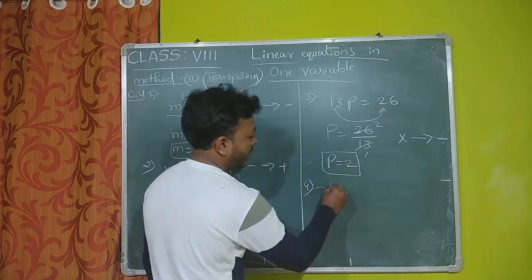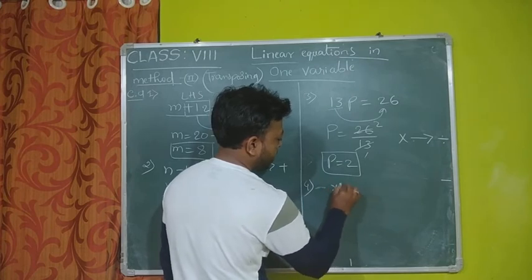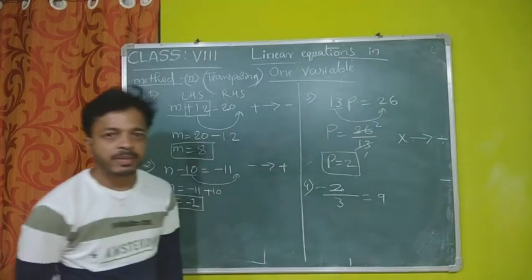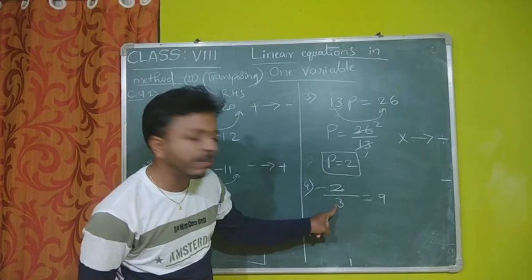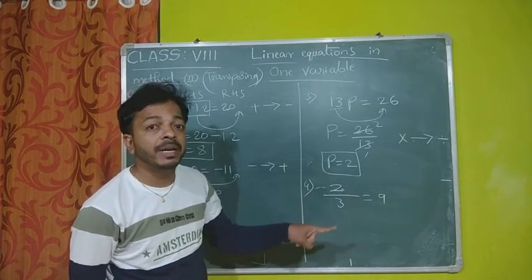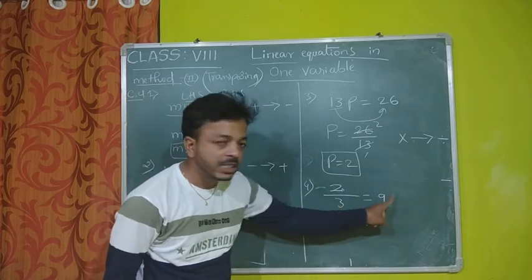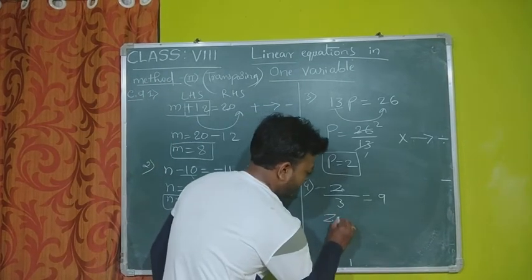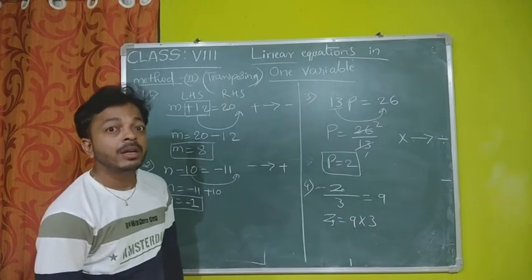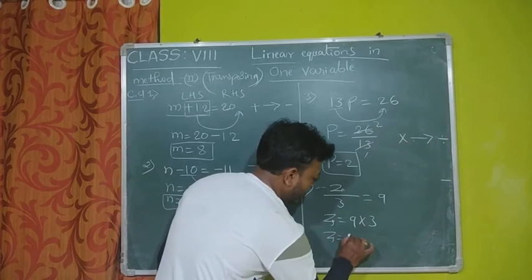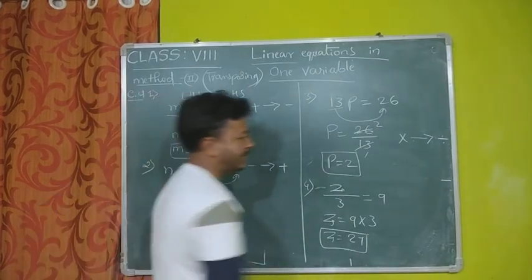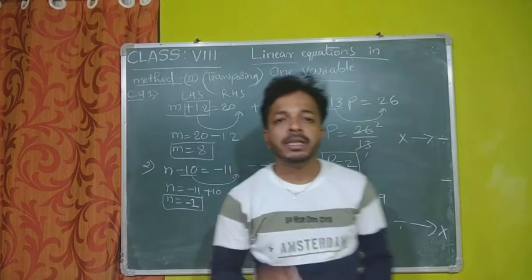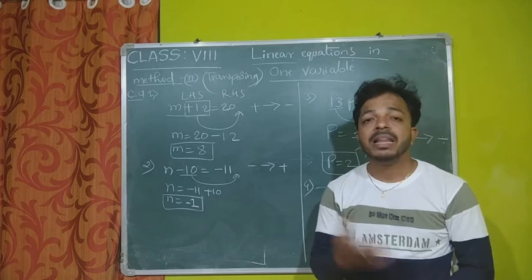Fourth example: Z divided by 3 equal to 9. The relation between the variable Z and the constant 3 is divided by. If divided by is shifted to the other side, it becomes multiplication. So Z equal to 9 multiplied by 3. Z equal to 9 times 3 equals 27. The solution of the variable is 27. So divided by becomes multiplication. This is the transposing method.